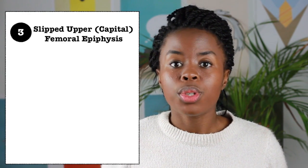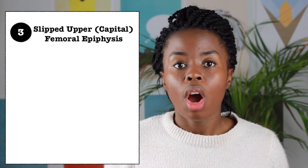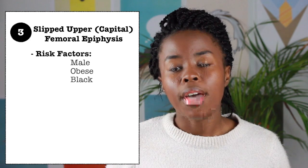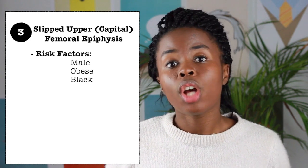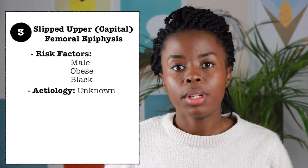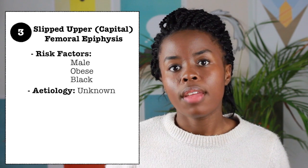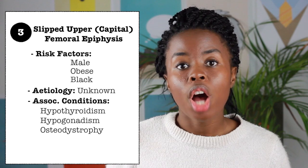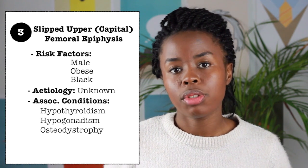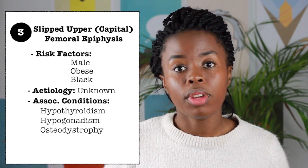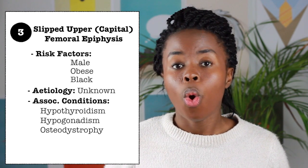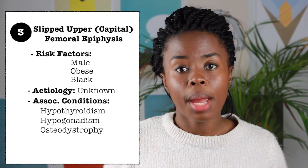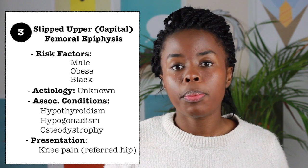Slipped upper femoral epiphysis, or SUFE, is the condition where there is slippage of the epiphysis relative to the femoral neck. It usually affects males, obese children, and those of African descent. The etiology is unknown, but SUFE has been associated with some endocrine disorders, including hypothyroidism, hypogonadism, as well as osteodystrophy of renal failure. In a child with bilateral disease, or a patient with SUFE who is greater than age 16 or under age 9, you should exclude these endocrine conditions. The patient can present with knee pain, which may be the only presenting symptom.